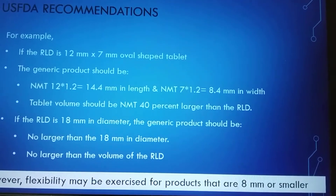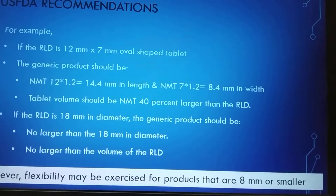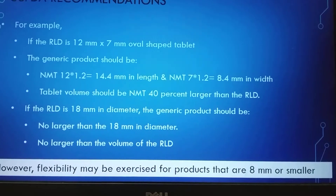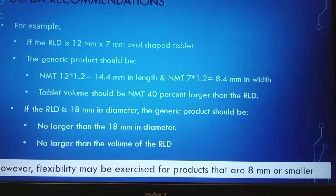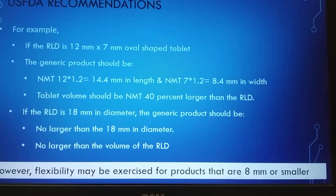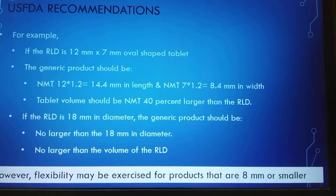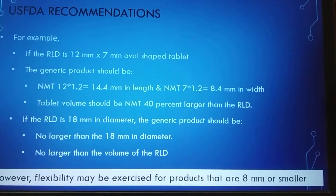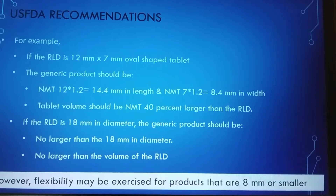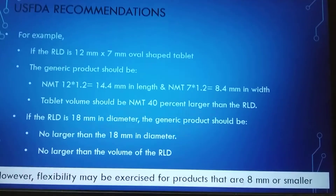For example, suppose the RLD is a 12 mm × 7 mm oval-shaped tablet. This fits into the first criteria, so a 20% tolerance in each single dimension is allowed. Therefore, the generic dosage form should not exceed 14.4 mm in length and 8.4 mm in width, and its volume should not exceed 140% of that of the RLD.